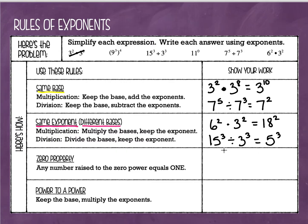So notice we're keeping the thing that they have in common. For the first two examples, the thing they had in common was the base, so that's what we kept. For the second two examples, the thing they had in common was the exponent, so that's what we kept. Keep the thing they have in common.